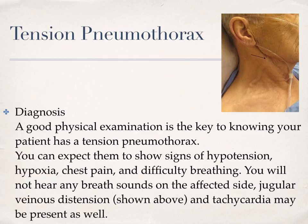Diagnosis: A good physical examination is the key to knowing your patient has a tension pneumothorax. You can expect them to show signs of hypotension, hypoxia, chest pain, and difficulty breathing. You will not hear any breath sounds on the affected side, and jugular venous distension, shown above, and tachycardia may be present as well.